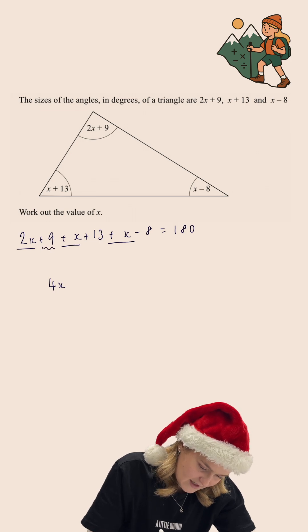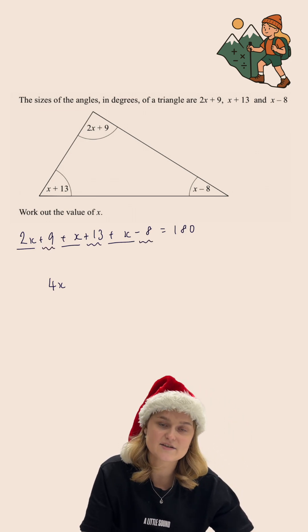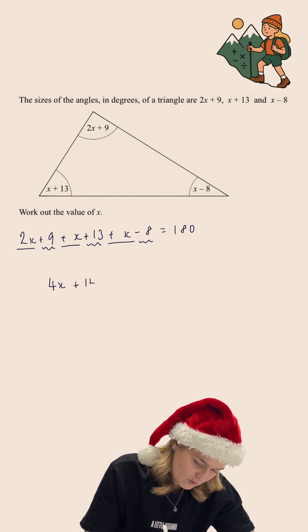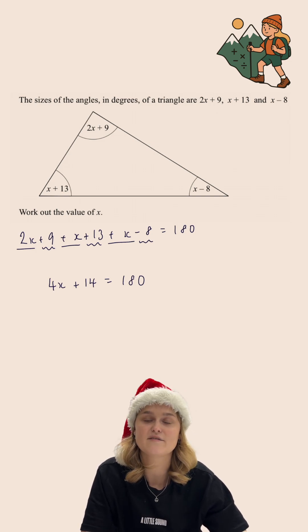We then have 9 add 13 which is 22 subtract 8 which is 14. So we have 4x plus 14 equals 180. This is far simpler now and far easier for us to solve.